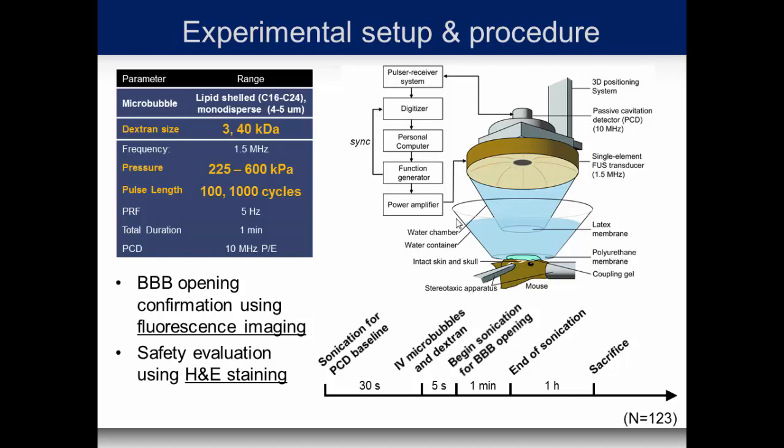We work with 3 kilodalton dextrans, which are the size of some inhibitors used in Alzheimer's disease to break up beta-amyloid, and neurotrophic factors on the order of tens of kilodaltons, which are proteins that help neurons regenerate. For blood-brain barrier opening confirmation we use fluorescence imaging, since the dextrans are fluorescent and we can see where we got the opening. We also perform a safety evaluation with H&E histology.